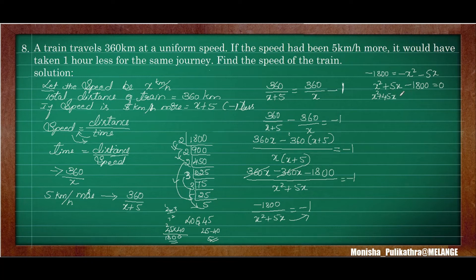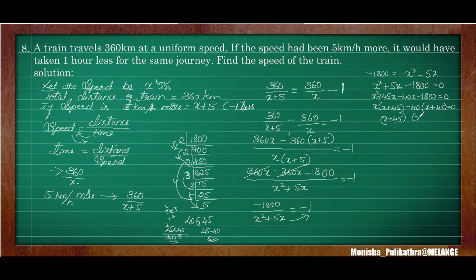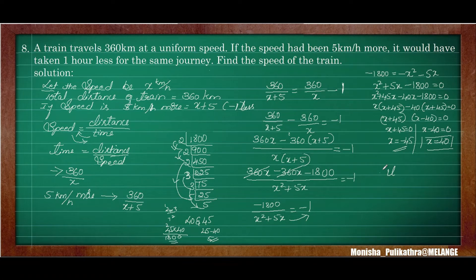Equating separately: x equals 45 — but x plus 45 gives x equals minus 45, speed cannot be negative so we discard it. From x minus 40 equals zero, x equals 40. Therefore the uniform speed of the train is 40 kilometres per hour.